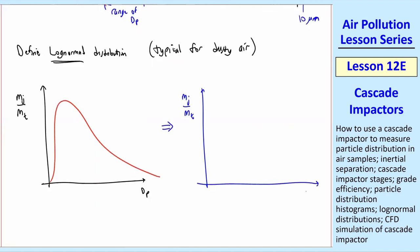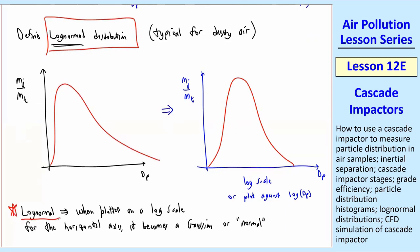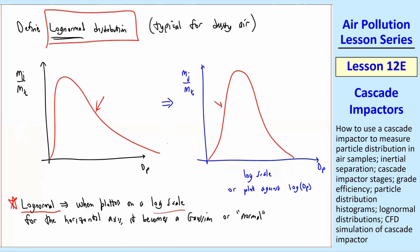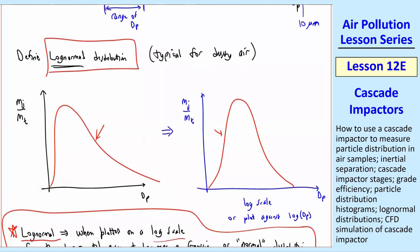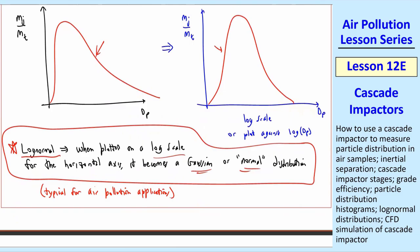Then this same curve ends up looking like a Gaussian, nice and symmetric. That's the definition of a log normal distribution. When you plot the distribution that looks like this on a log scale, as we've done here, a log scale for the horizontal axis, it becomes a Gaussian or normal distribution. So that's the definition of log normal. And as I said up here, that's pretty typical for the types of air that we sample in air pollution applications.